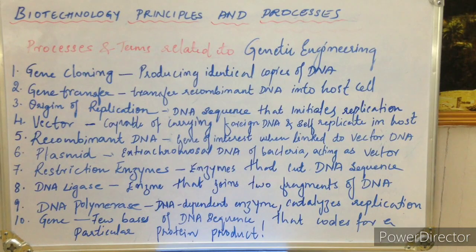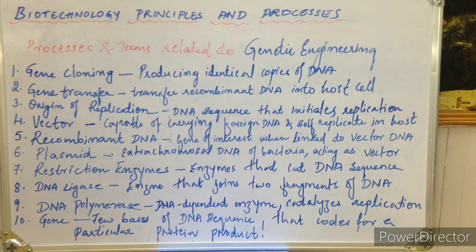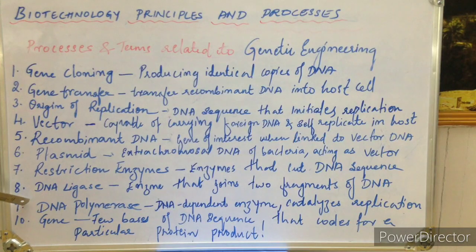Next is DNA polymerase. As mentioned in the context of origin of replication, DNA replication involves building up a DNA chain by adding nucleotide bases, and this is performed by the DNA polymerase enzyme. It is a DNA-dependent enzyme that forms the DNA chain and carries out the replication of the recombinant DNA in the host cell.